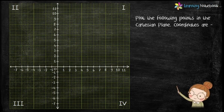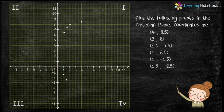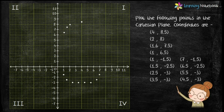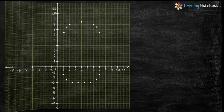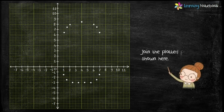Let's start plotting the points from the first coordinate. Plot the following points in the cartesian plane to form the body of the minion. The coordinates are given here. We have plotted the points in the first and fourth quadrant. Now join the plotted points as shown here.